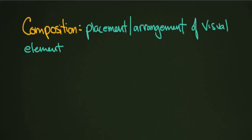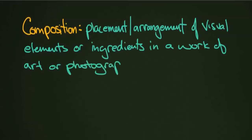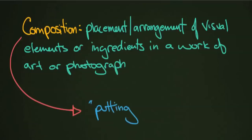Putting together would be another way of defining composition — it's basically how you arrange the photograph. We'll talk about some examples in just a second, but first it's good to set this definition up because it's an important element of this course. We have sections called composition and other sections covering the more technical aspects, because photography is both an art and a science.